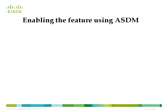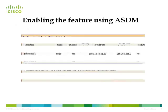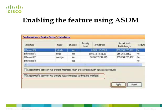This feature can also be enabled using ASDM. Go to Configuration > Device Setup > Interfaces, then choose the option 'Enable traffic between two or more hosts connected to the same interface.' Check the box and click Apply to enable the feature.